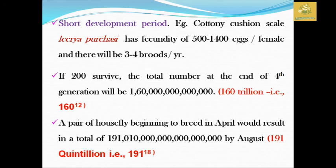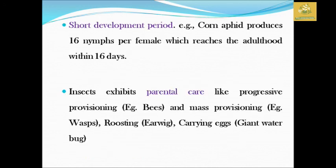If we look at a housefly: at the end of April, May, June, July, August — after that, it was a pair of houseflies. So if an insect is a female, it will be 16 days for a generation. It will be 16 days, which gives an enormous reproductive capacity.